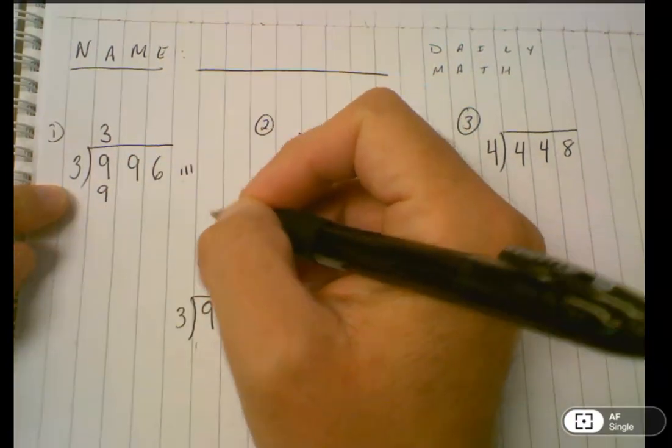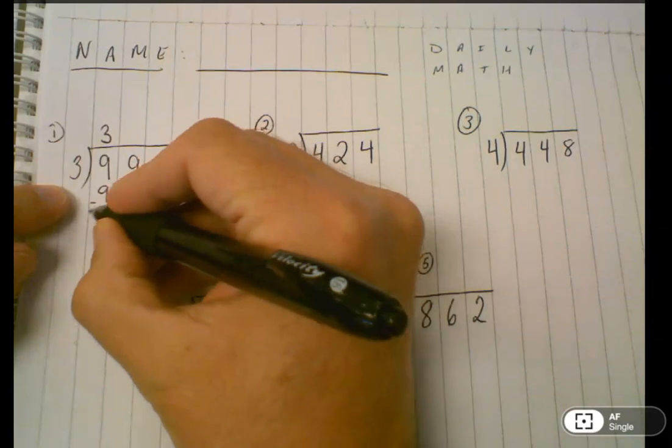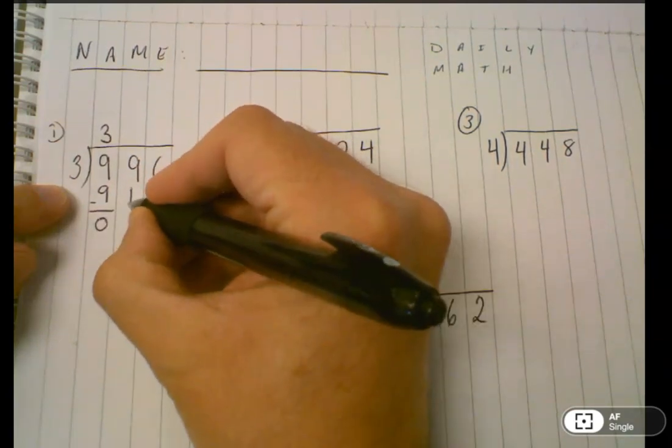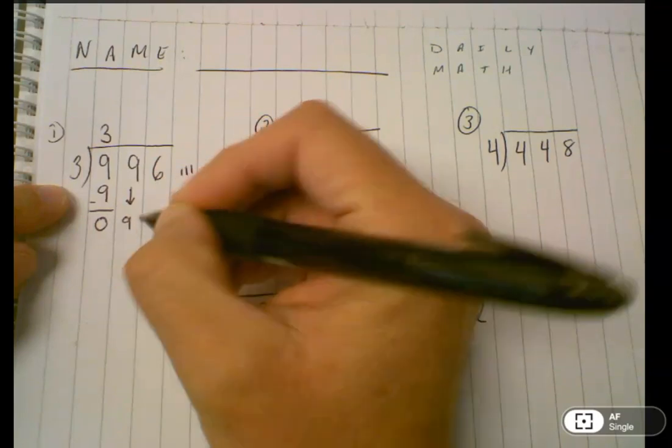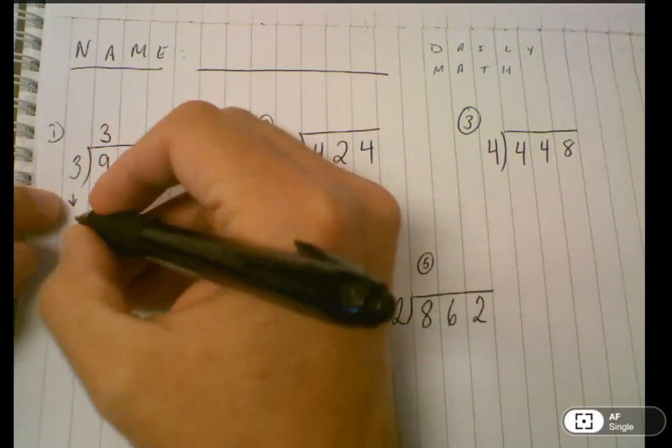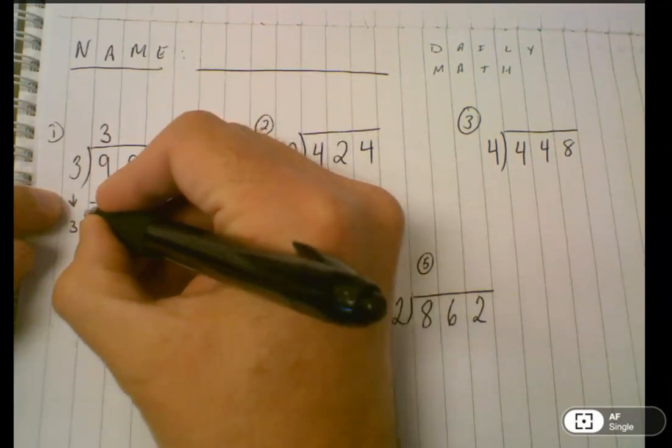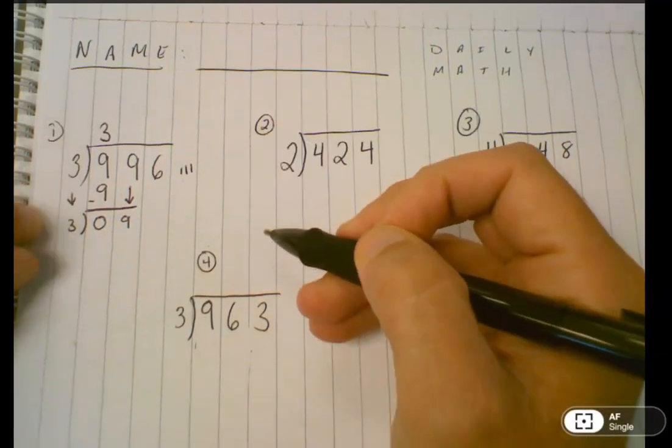Because division is repeated subtraction, the third step is to subtract the nine minus nine. And the fourth step is to bring down the next piece. You can also bring down the divisor of three. And finally, you repeat.